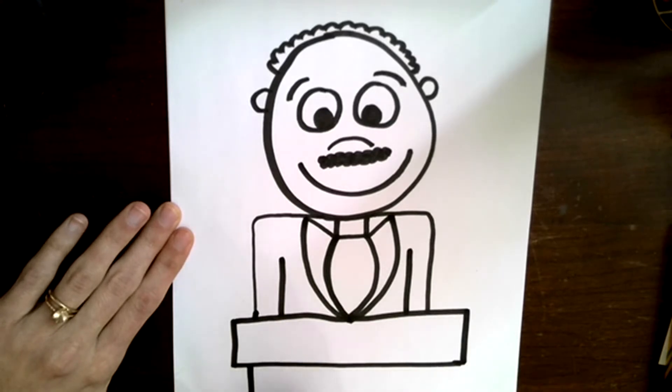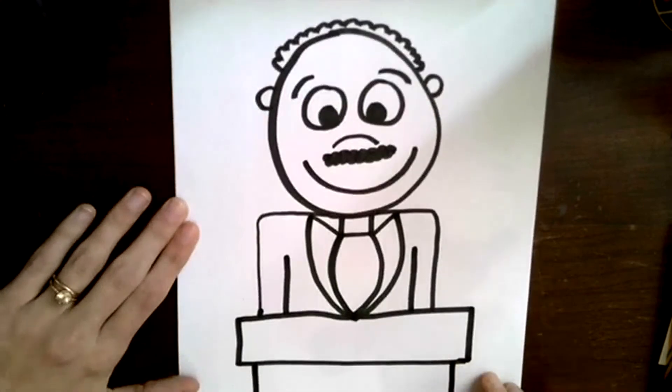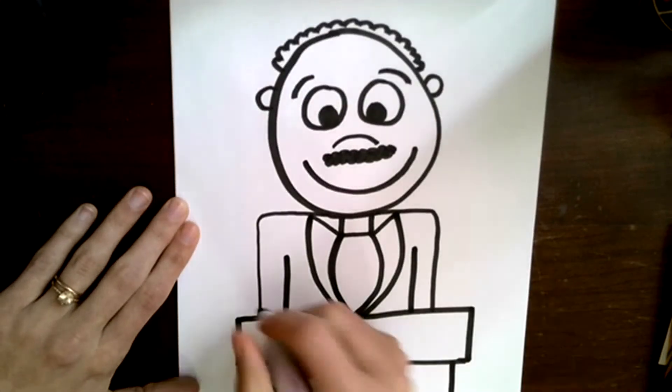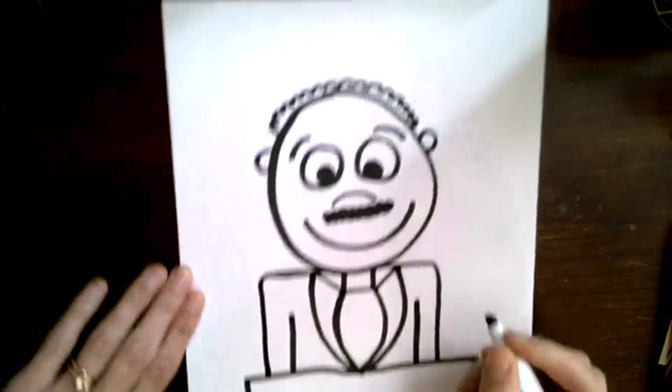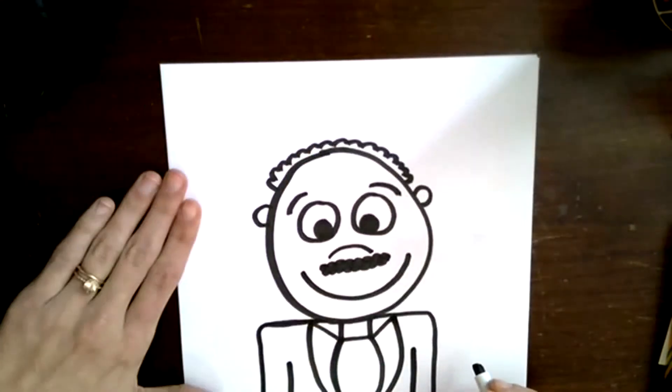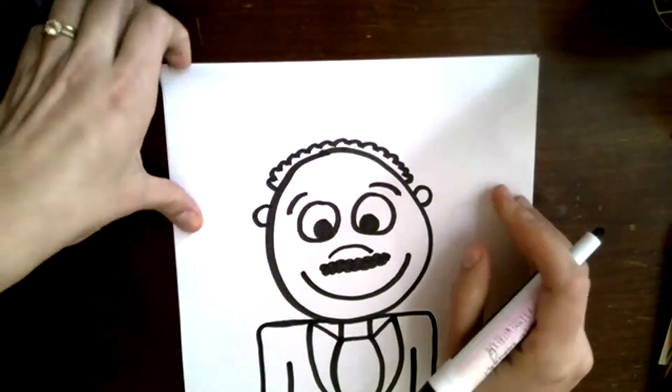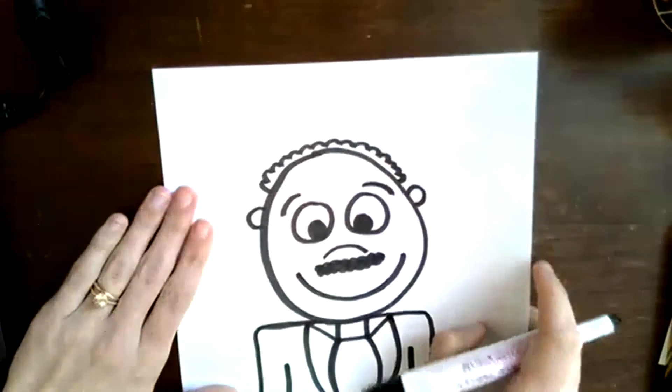And then you can draw two lines down like this. And there's Martin. We're going to do a little bit of coloring together. We can also write a little message here at the top. We can write 'I have a dream.'